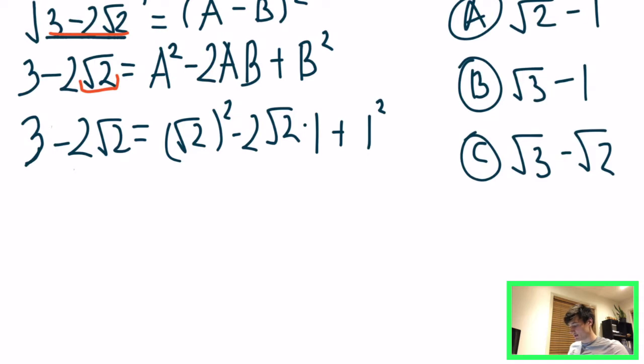And then the next thing we can say, if we look back to the expanded form of the perfect square, so we see that A lines up with square root of 2, we see that B lines up with 1. So if we take it one step further back, we can see that it's A minus B all squared. And we know that A is square root of 2, we know that B is 1.